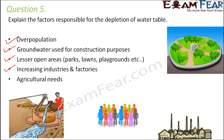Agricultural needs are another factor. In many places, irrigation still uses groundwater through traditional methods, which waste a lot of water. This means large quantities of water are used up for agricultural needs, resulting in the depletion of the water table.